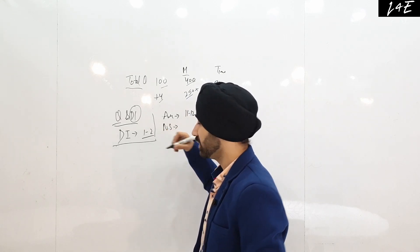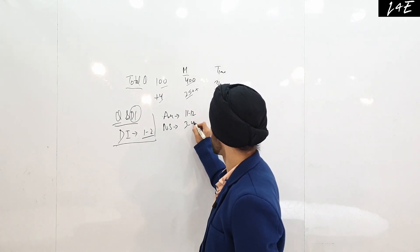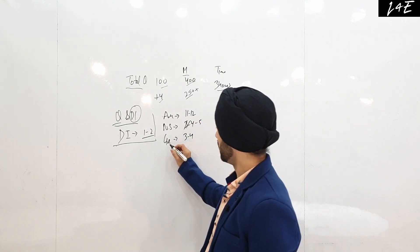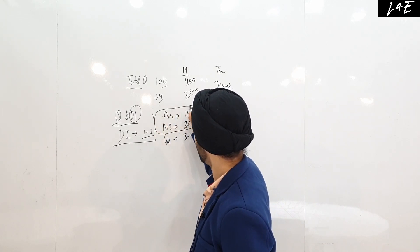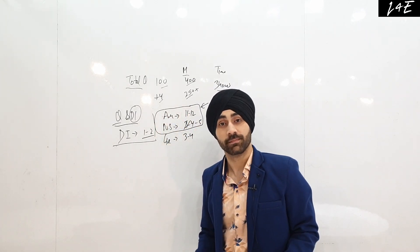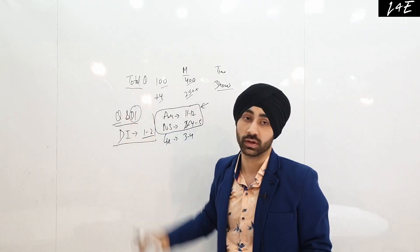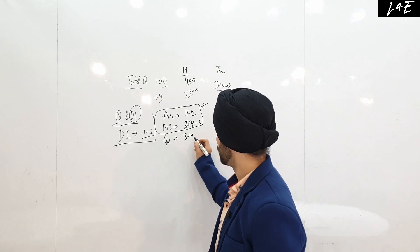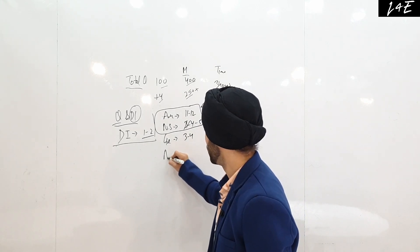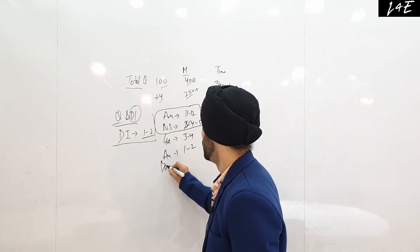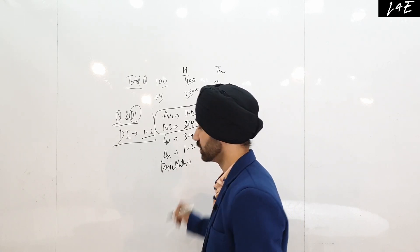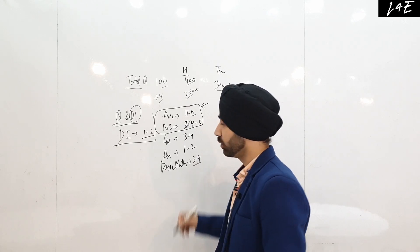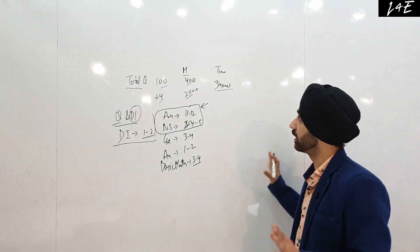After Arithmetic, Number System contributes around 3 to 4 questions, and Geometry contributes around 4 to 5 questions. If you've done Arithmetic, Number System, and Geometry, you've already covered more than 50% of the Quant section — that's roughly 12 plus 4 equals 16 questions. Algebra contributes 1 to 2 questions, and Basic Maths gives about 3 to 4 easy, scoring questions that almost everyone attempts in the exam.